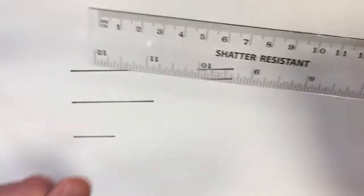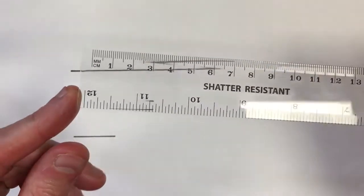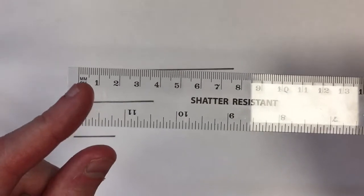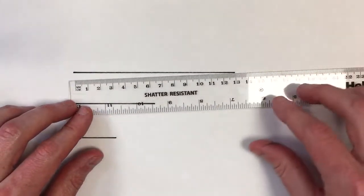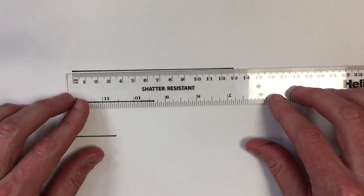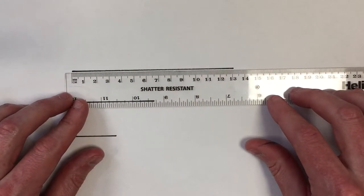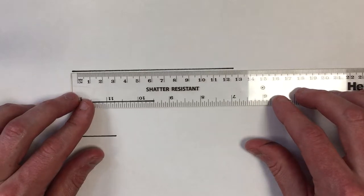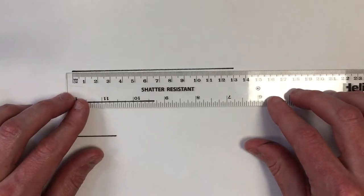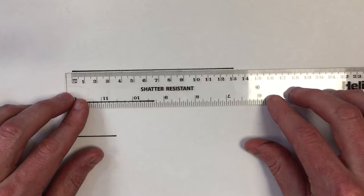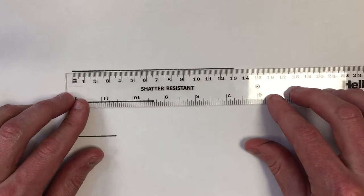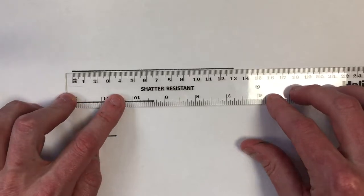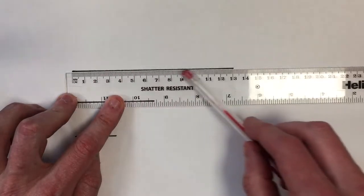The way you use a ruler is to start with your zero line and place it on the end of the line that you're measuring—not the start of the ruler, but where we start counting the centimeters from. Line it up as accurately as you can, and then count along to the far end.